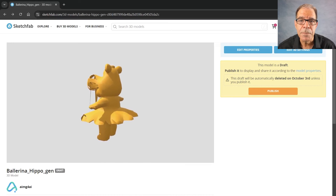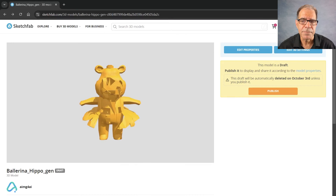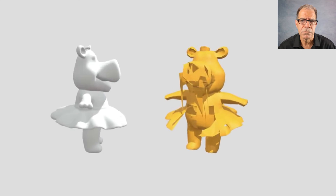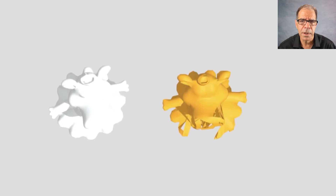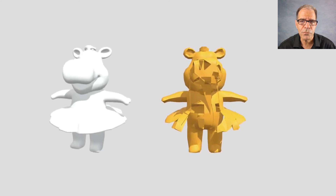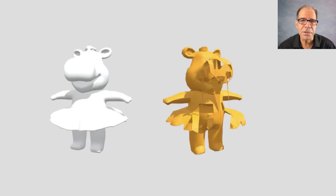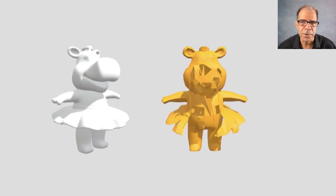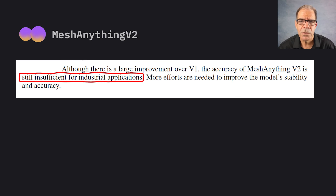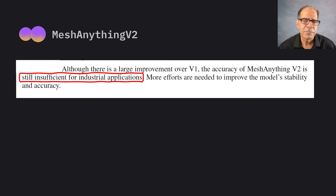Let's compare before and after side-by-side. Poor little Ballerina. In fact, you can see the final words of the paper here. It says: although there's a large improvement over V1, the accuracy of Mesh Anything V2 is still insufficient for industrial applications. More efforts are needed. Okay. Noted.